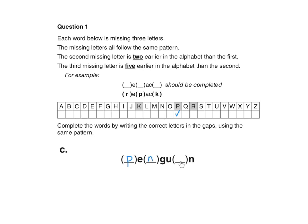Then we know the third missing letter is five earlier than the second letter. So if the second letter is N, then the third missing letter will be one, two, three, four, five. The letter I.